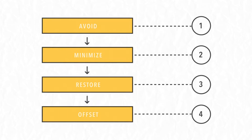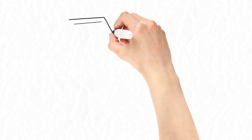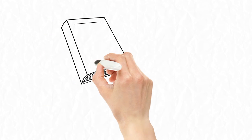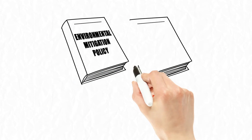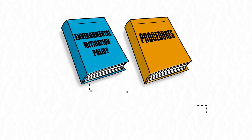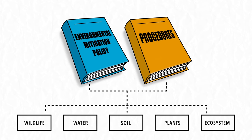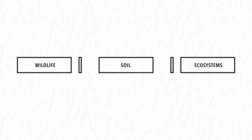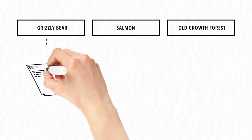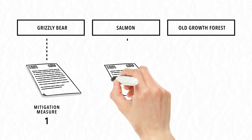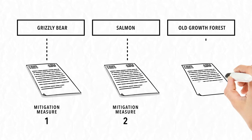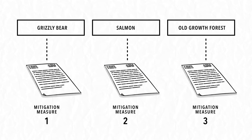Together, the policy and accompanying procedures lay out what information should be considered when determining which values are affected by the project, and they underscore the linkage between the type of impact occurring and an appropriate mitigation measure.